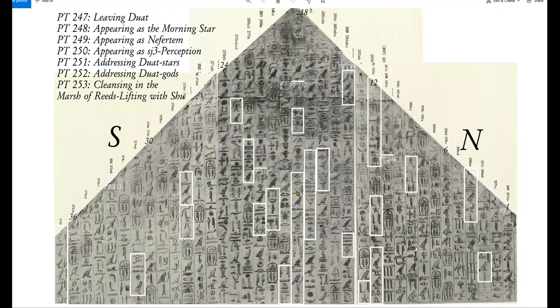Today I'm going to show you how the walls in the Pyramid of Unas can talk to each other textually and topographically — to complement each other in conveying a special message. This is evidence that the words themselves are not sufficient to understand the whole meaning of at least some parts of the pyramid texts. The position where these words are written is also very important.